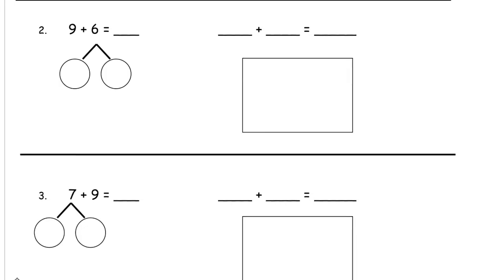9 plus 6. We're drawing the picture. First we have the 9: 1, 2, 3, 4, 5, 6, 7, 8, 9. Then I'm going to draw the 6: 1, 2, 3, 4, 5, 6. You can see the 6 is split into 1 here and 5 there. The 9 and the 1 together make a 10, and then you have these 5 left. You don't have to use different colors; I'm just doing it so you can see how the picture is connected to the number sentence and the number bond. 10 plus 5 is 15.